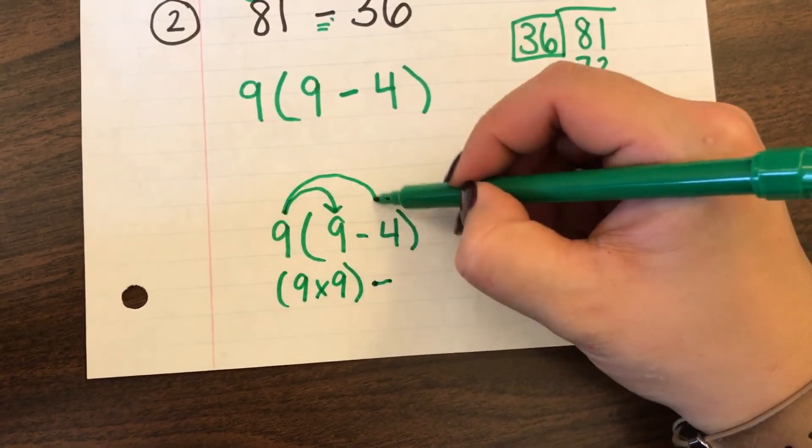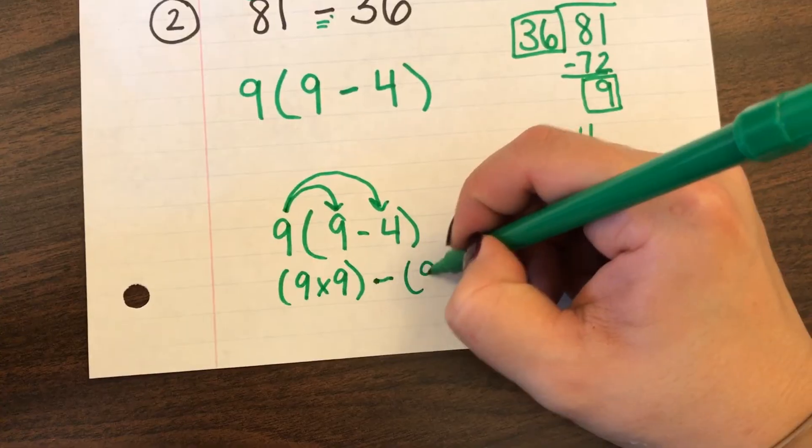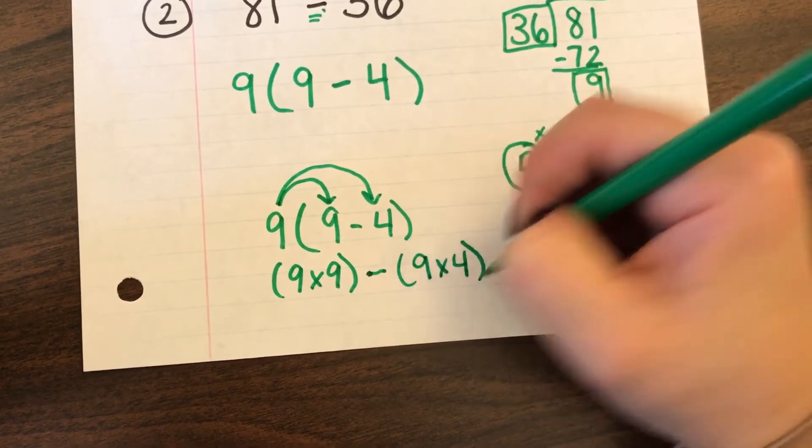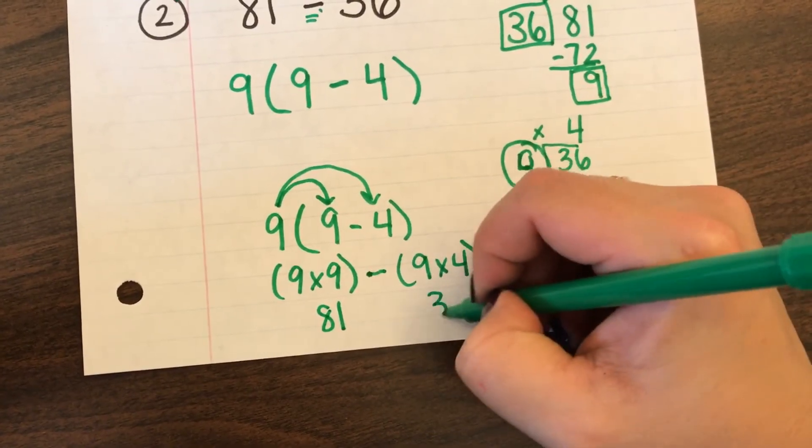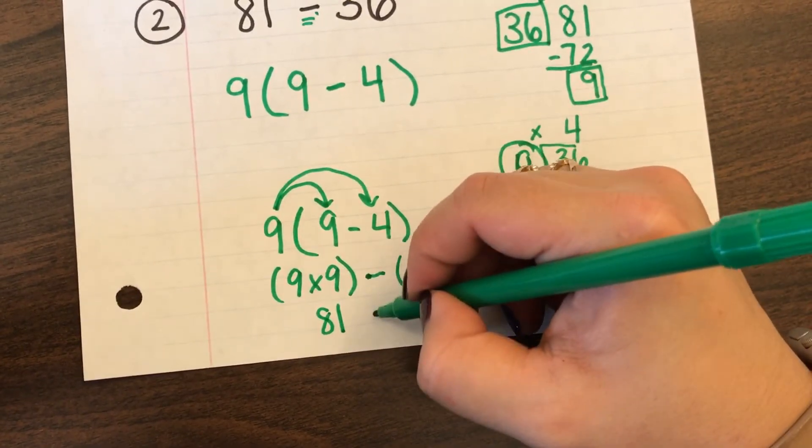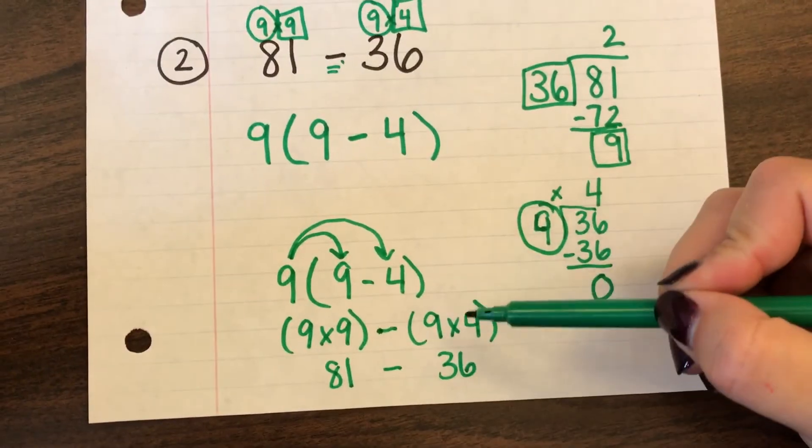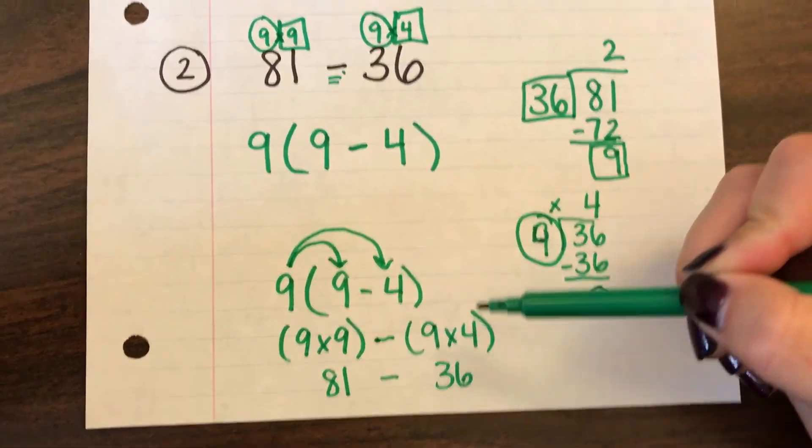And I'm also going to say bye multiply to the 4. 9 times 9 I know is 81. 9 times 4 I know is 36 with a subtraction sign in between.